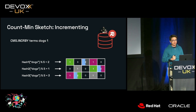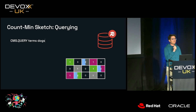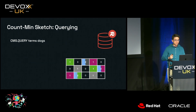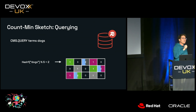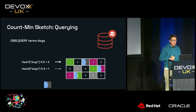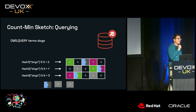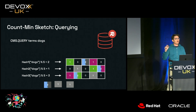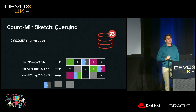Now let's try to retrieve some elements back from the CMS, starting with 'dogs.' We issue the command CMS.QUERY, the name of the CMS, and the term 'dogs.' Instead of incrementing counters, Redis looks at what number is stored. For the first row it sees 2, for the second it sees 1, and for the last it sees 1. Redis picks the minimum value out of these three, which is 1, and responds that dogs has probably been counted only once.